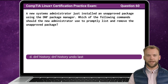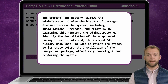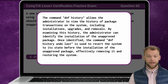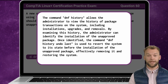The answer is D: dnf history and dnf history undo last. The command dnf history allows the administrator to view the history of package transactions on the system, including installations, upgrades, and removals. By examining this history, the administrator can identify the installation of the unapproved package. Once identified, the command dnf history undo last is used to revert the system to its state before the installation of the unapproved package, effectively removing it and restoring the system.